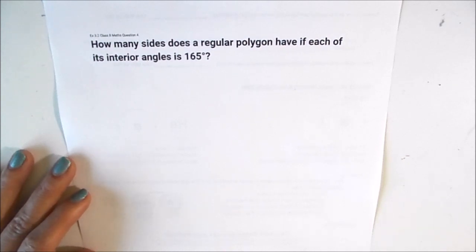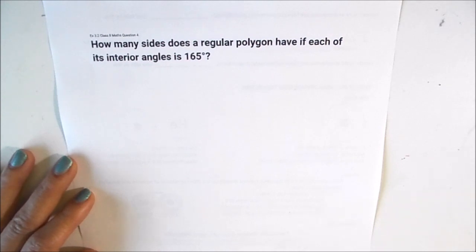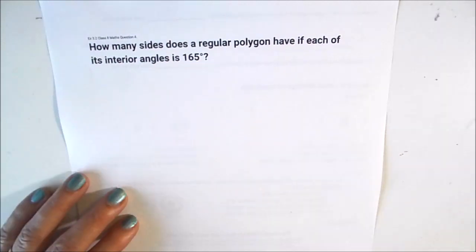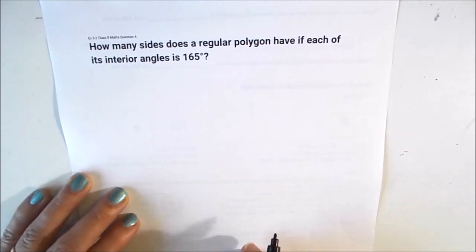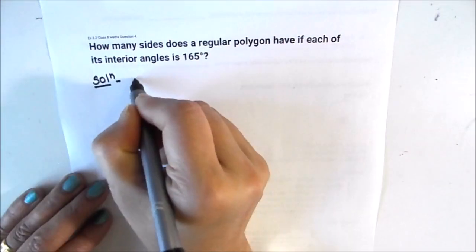Before starting the solution, let's revise the basic attributes of a polygon. A regular polygon is a closed figure having all sides equal and all angles equal. We are also going to make use of the formula for finding the sum of all interior angles of a polygon.